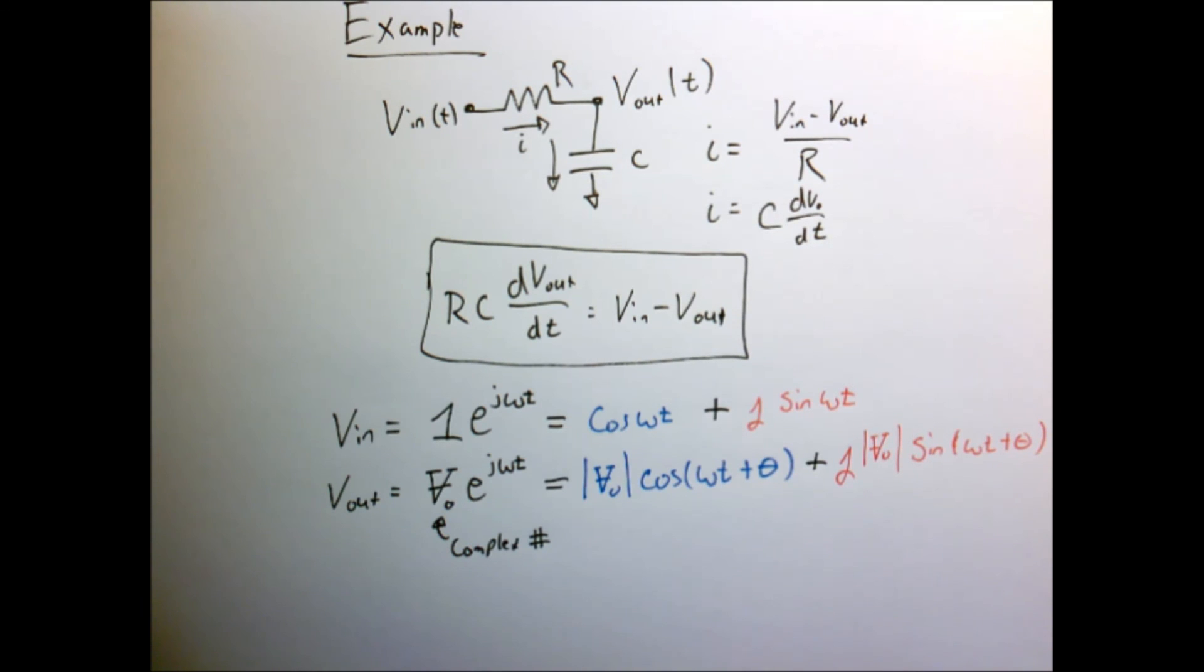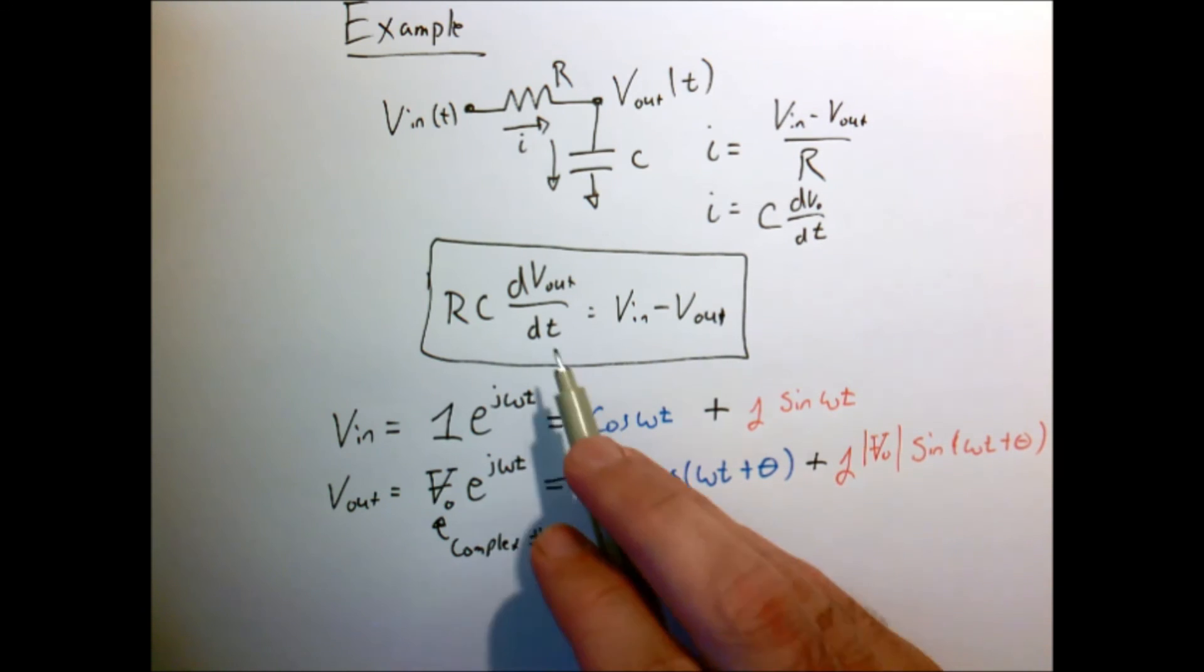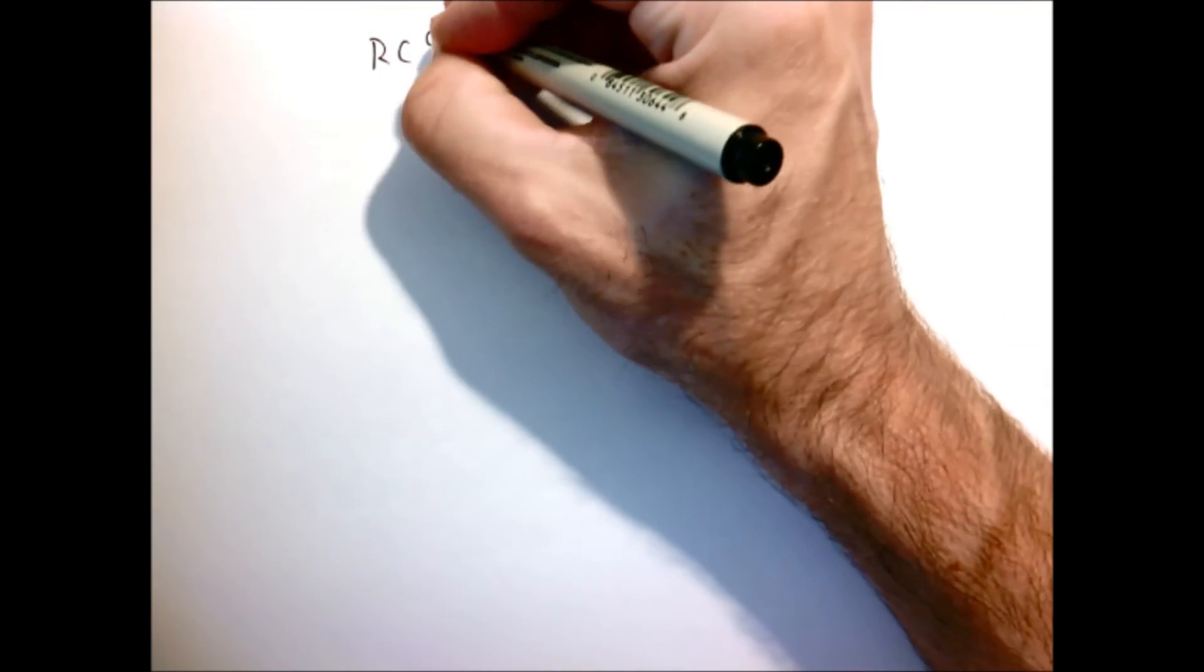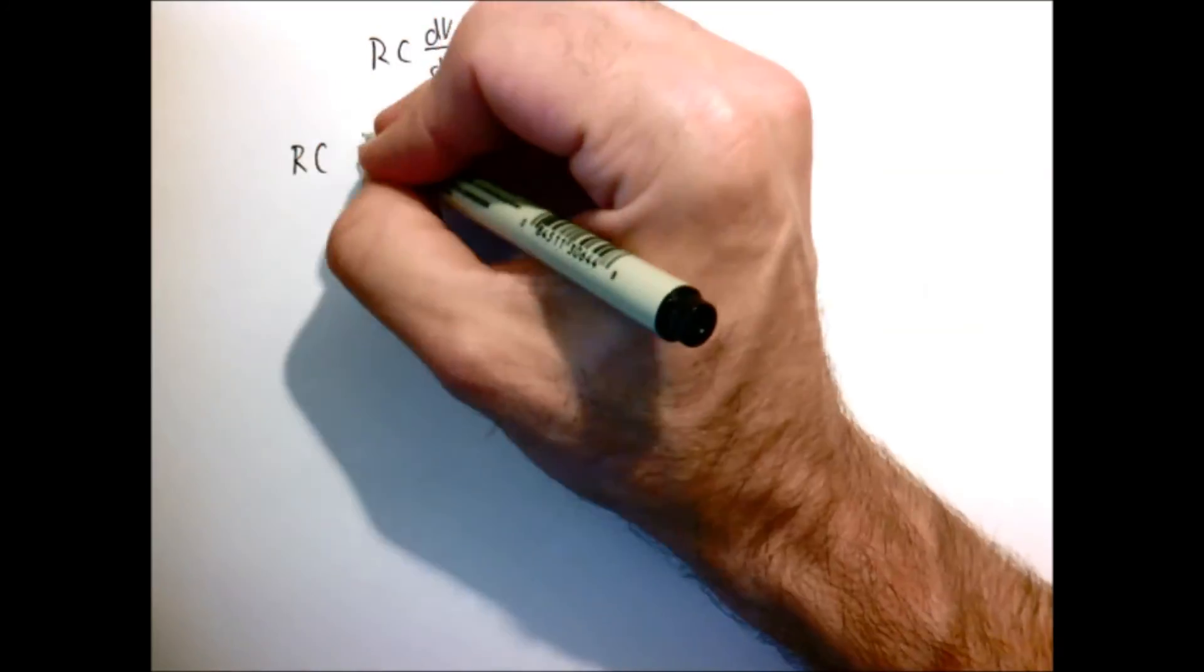So the only thing weird here is that we have both this real thing and this imaginary thing, and that might bother you, but let's just work it out and kind of see what it gives us. So let's take these two forms for V in and V out and stuff it into this equation and kind of see what we get.